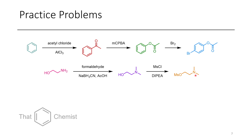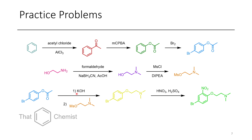Since we need that nitrogen-containing fragment with a leaving group, I would propose as a starting material this two-carbon building block, which could undergo a Borch reduction to give us this reductively aminated product. If we want to make this OH into a good leaving group, we could mesylate it to make a mesylate — this is a good leaving group and this is really well set up for the next step. The first thing we would have to do is hydrolyze this ester with potassium hydroxide, which would make the phenoxide. Since it's already deprotonated, we could just add our amine-containing mesylate, which would then undergo an SN2 reaction affording this ether product.